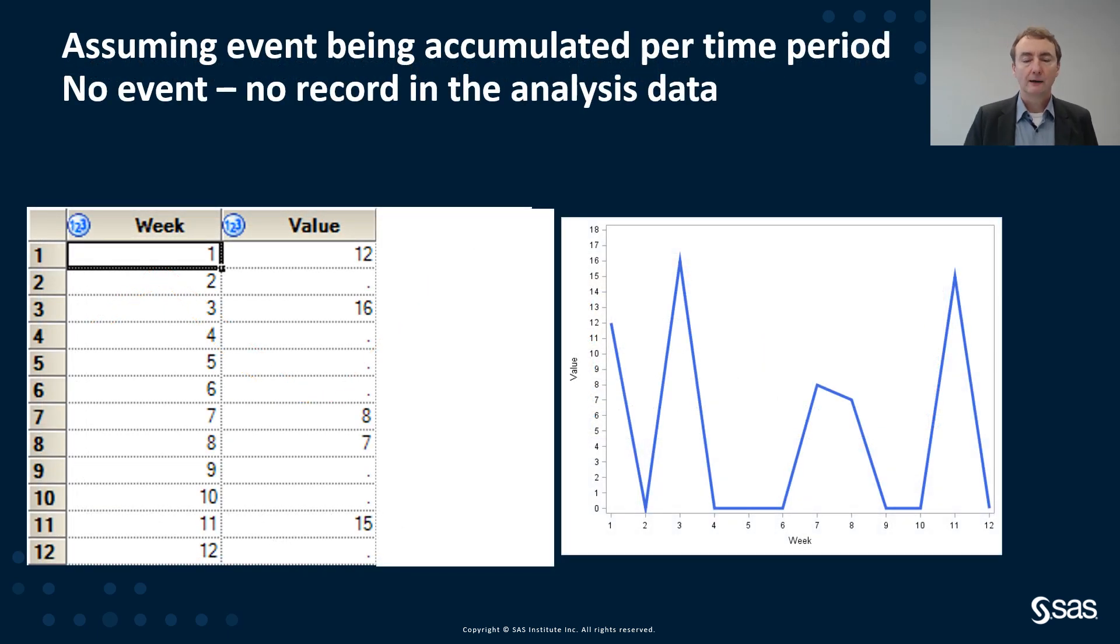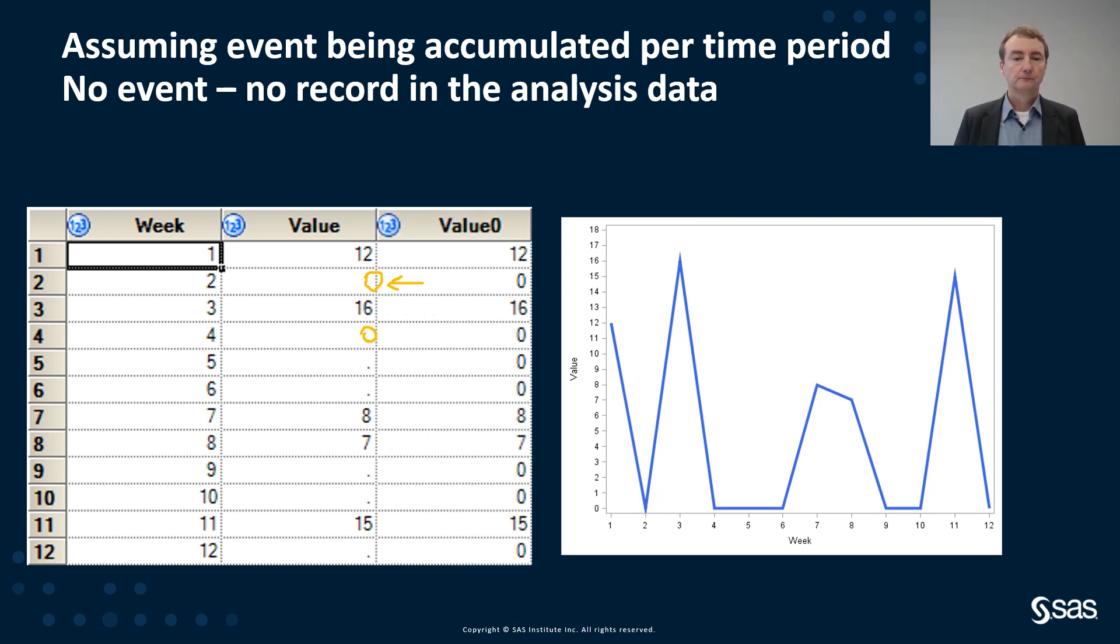The blue graph looks different because we have inserted records for the missing time points and have inserted the value zero for that if no transaction, if no behavior was measured in a certain time point. This is the reason why, based on the same data, the two graphs look highly different.